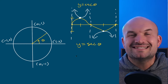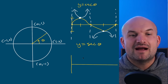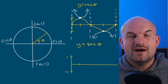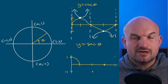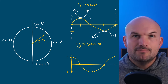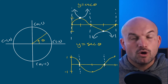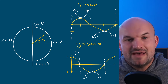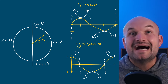For y equals secant of theta, I use the same process but with the reciprocal graph cosine. I quickly plot the cosine points and connect them. Wherever cosine equals zero, secant is undefined — so I place asymptotes there. When cosine equals 1 or negative 1, secant equals those same values, so they share those points and the secant graph approaches them from the opposite directions.